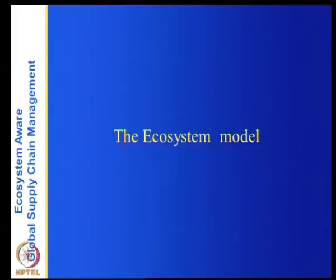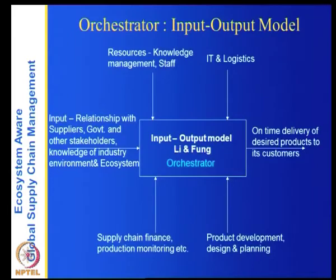We are going to continue this lecture on Li and Fung and complete the ecosystem model. We have seen in the previous lecture one part of the ecosystem — the service chain. We mapped the service chain and will now see the other part of the ecosystem and map it as well.